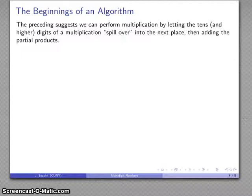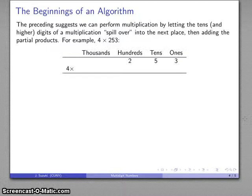Well again, what this suggests is that I can perform the multi-digit multiplication by letting the tens and higher digits of a product spill over into the next place, and then add the partial products. So for example, if I wanted to do four times 253, again I'll set down my place value chart. I want four of each of these things, four twos, four fives, four threes. And I'll record those.